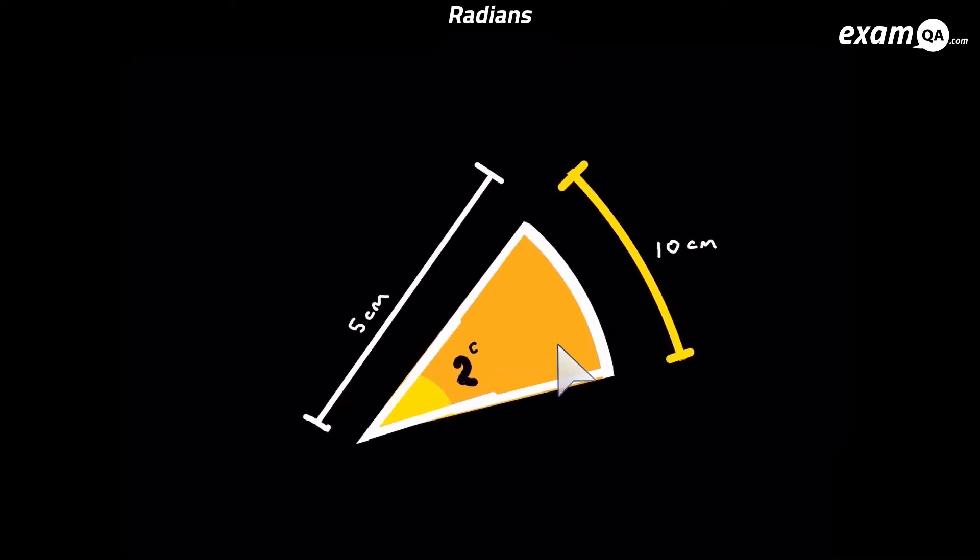Here we've opened the sector to two radians. So the arc length should be two lots of the radiuses. The radius is five, two lots of it will be 10. So the arc length is 10 centimeters. And that's because the angle is open to two radians.